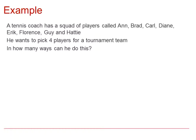The answer is simply eight choose four. You can use the button on your calculator, or you can write it out as eight factorial divided by four factorial times (eight minus four) factorial. Either way, it works out at 70. You may also see this written as eight-four in bracket notation.